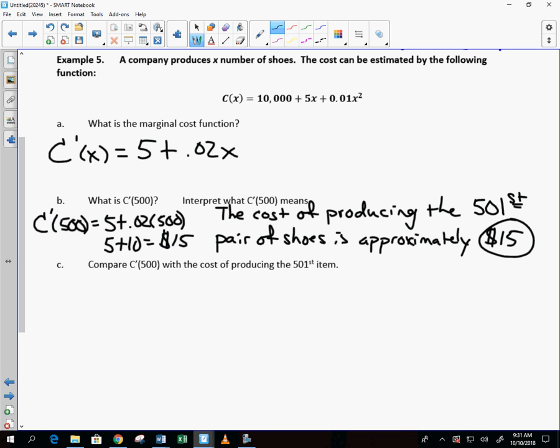Yes, I do expect you to write in complete sentences. We are in high school. So we're going to do that. The cost of producing the next item. What's the next item? The 500 first. Pair of shoes. Yep. The next item. It's approximately. It's approximately $15. The next item. No, C'(500) is exactly $15. But, we have to interpret it what it means. Okay. And, what it means is the cost of producing the 501st item is approximately $15. I'm going to show you how much it costs exactly to produce the 501st pair of shoes. Now, why is it approximate?